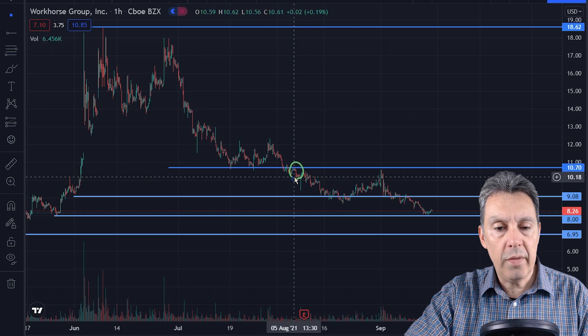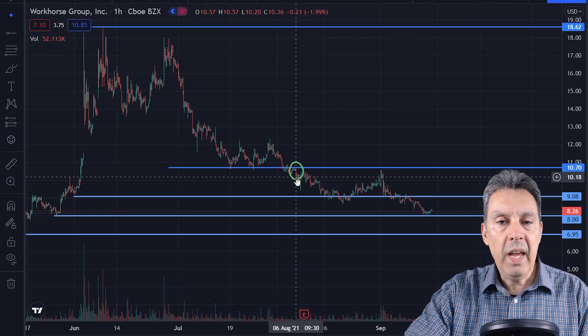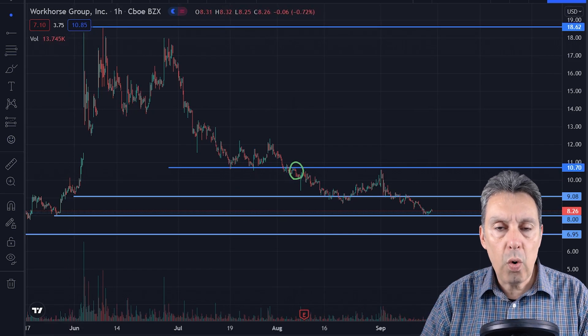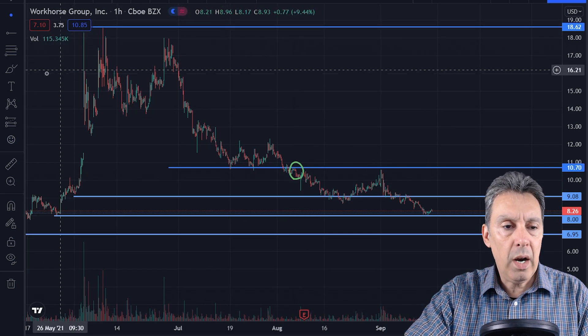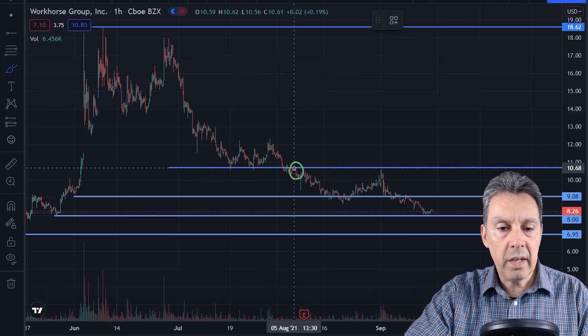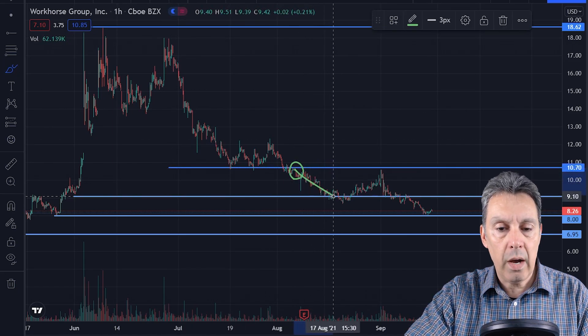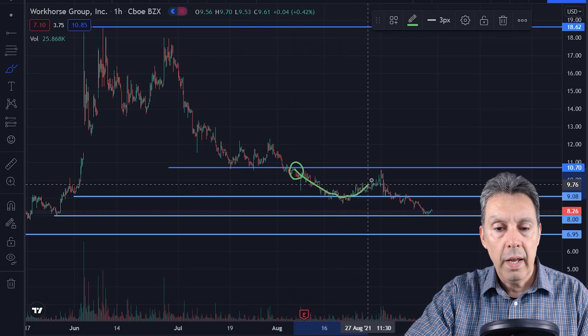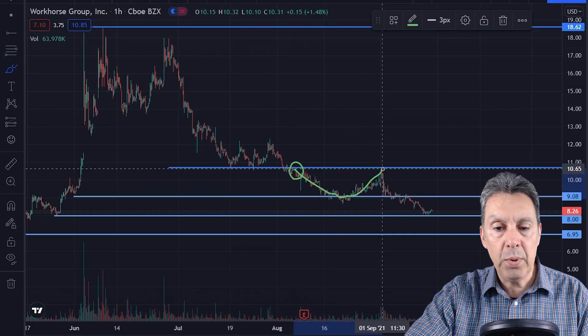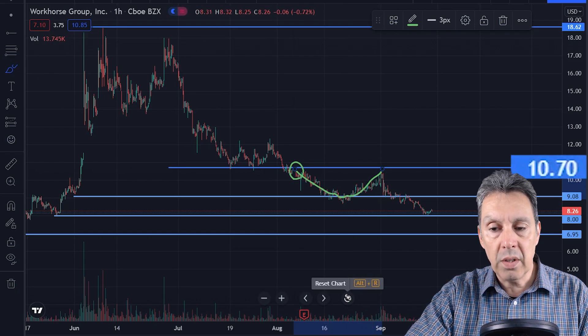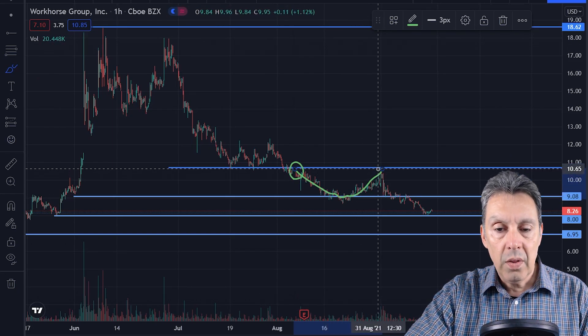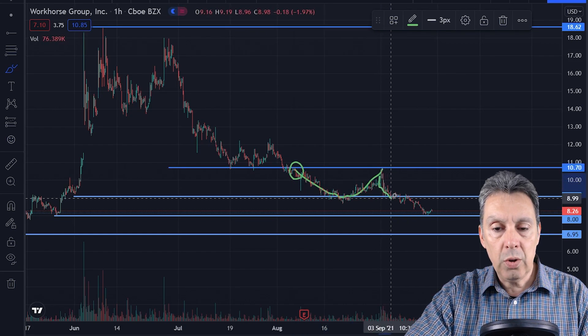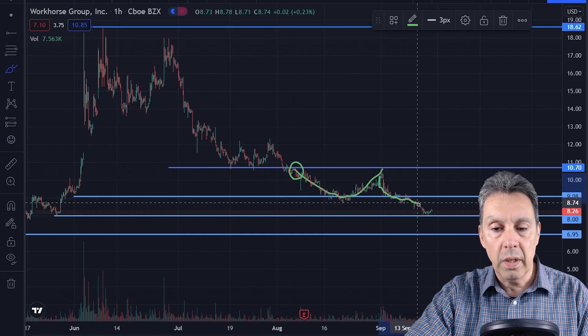This is the last three months of trading for Workhorse. In this area right here where I've drawn the circle, they got rid of their CEO, they did their second quarter earnings call, and from there you can see that the stock kind of went straight downhill. It looked like it was finding support right here and it ran back up to this $10.70 line. That proved to be resistance and it's been trending downwards ever since.